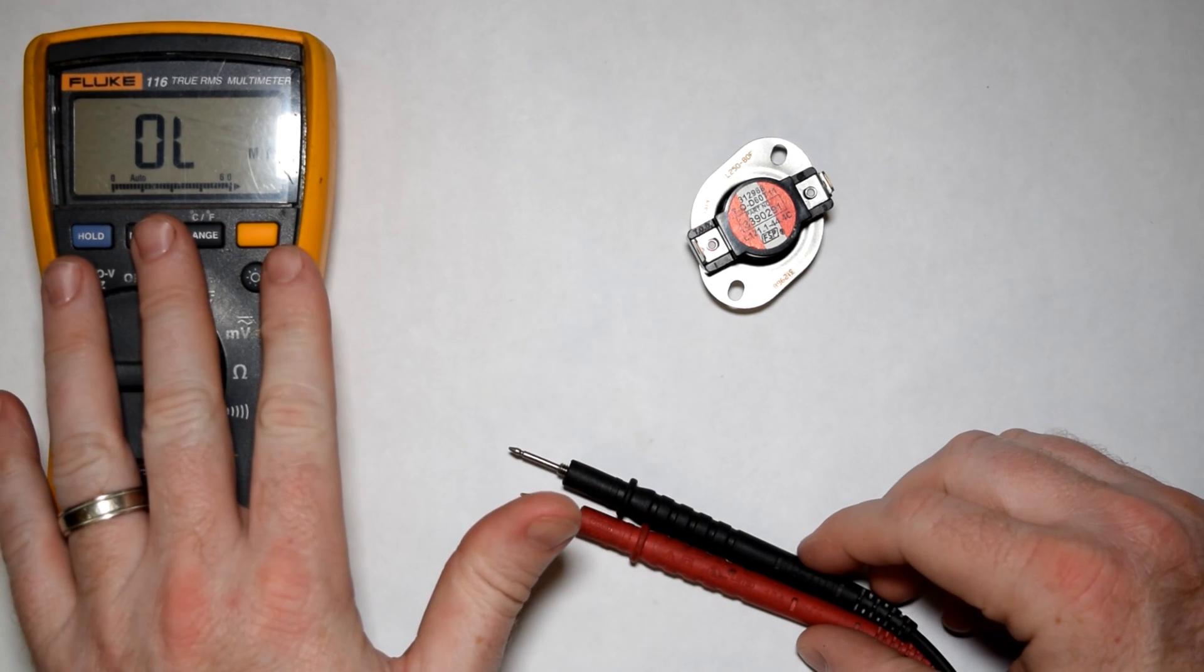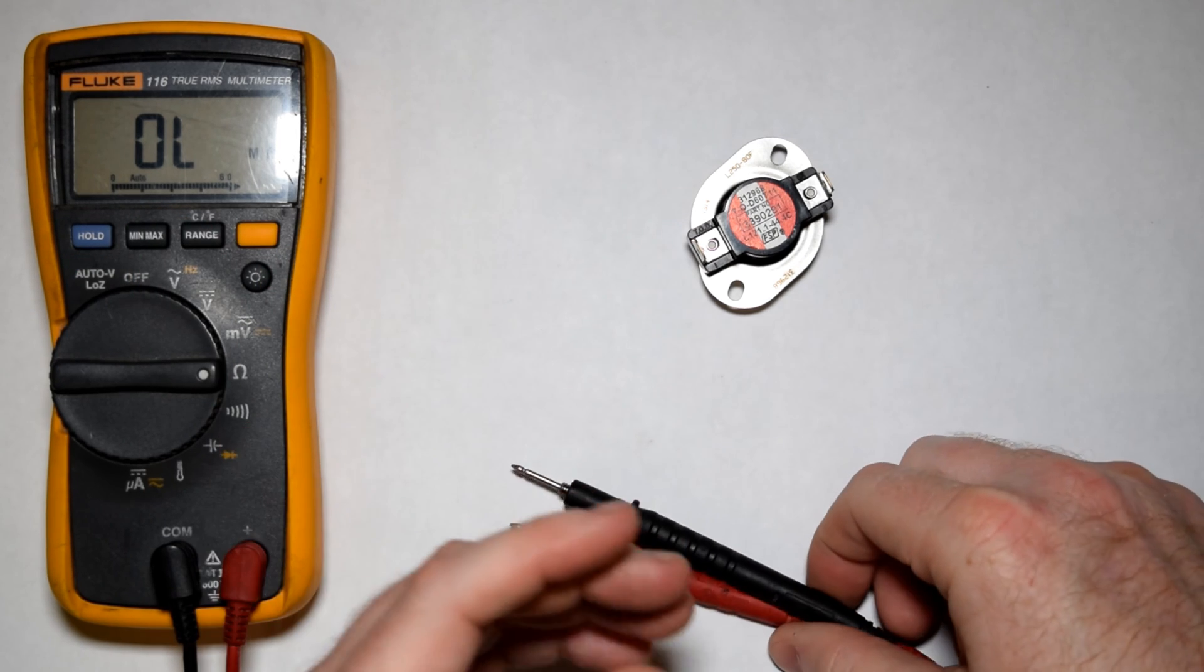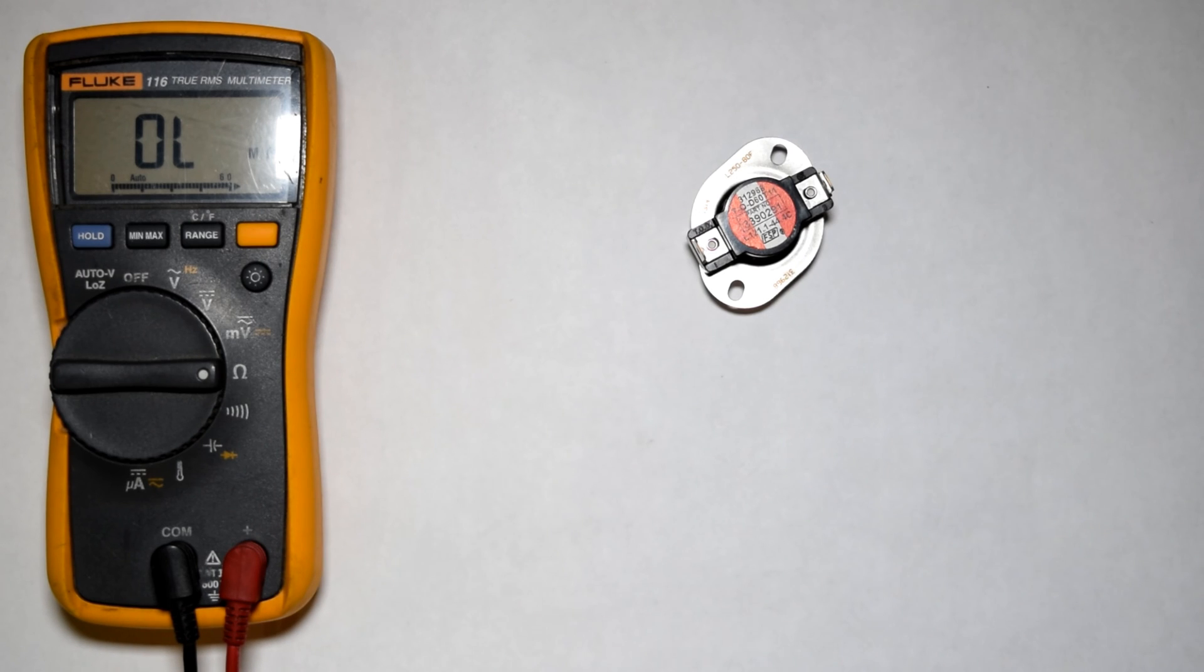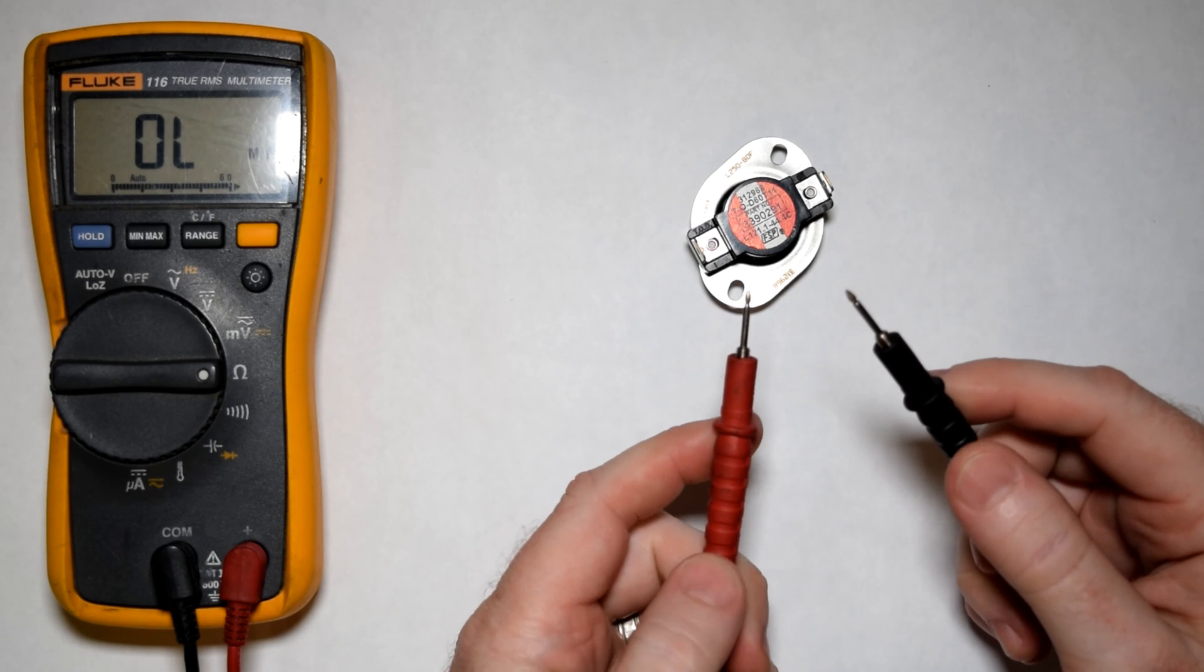Your meter may or may not look like mine. This is a Fluke model 116, outstanding meter. Yours can be anything from a $5 generic version, no problem. Still going to do the test the same way.